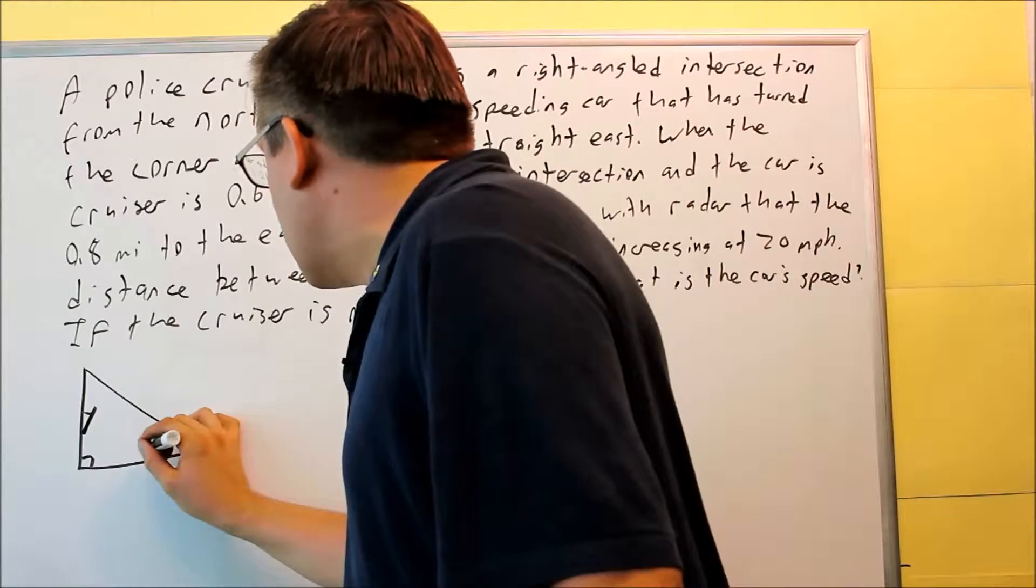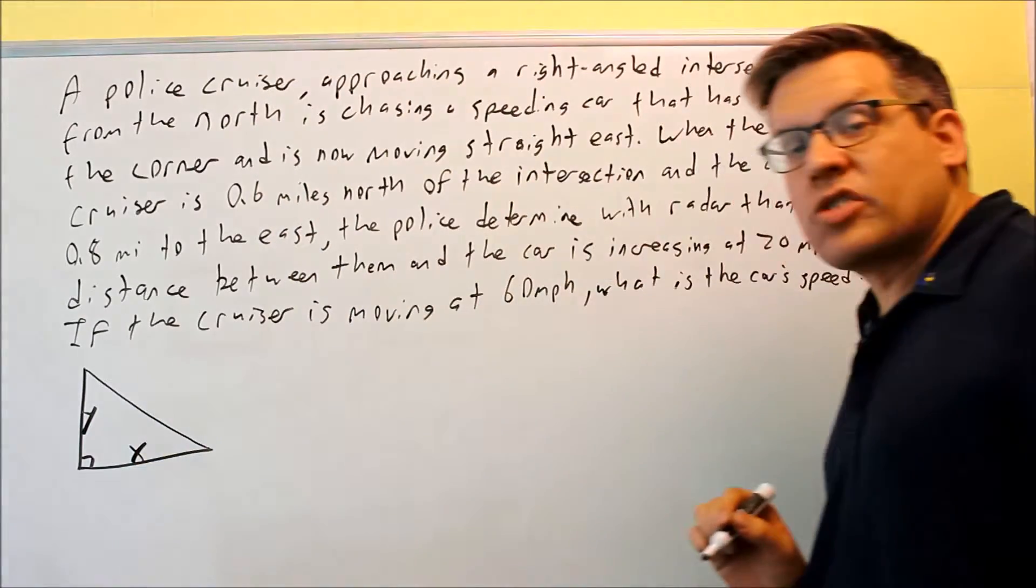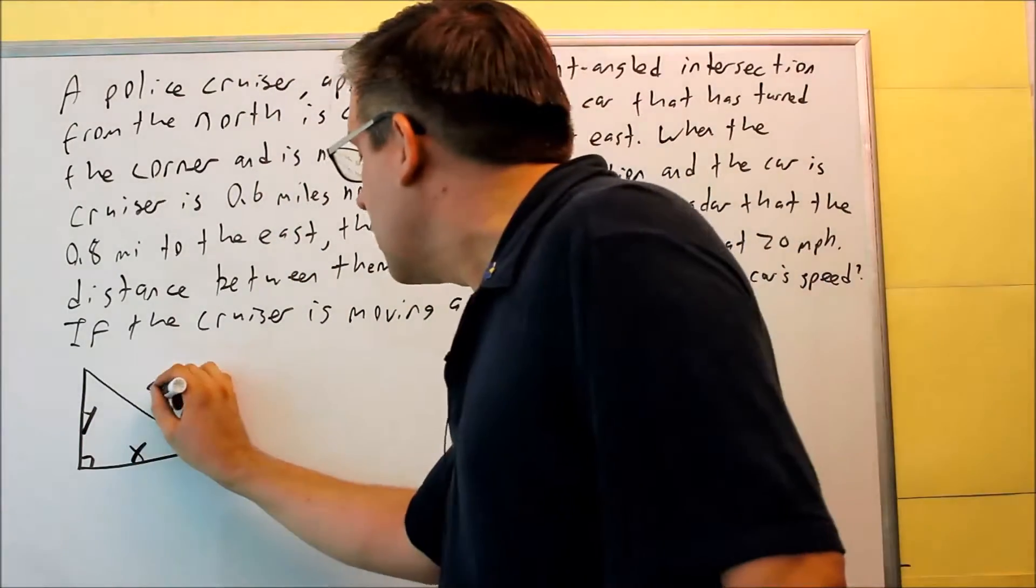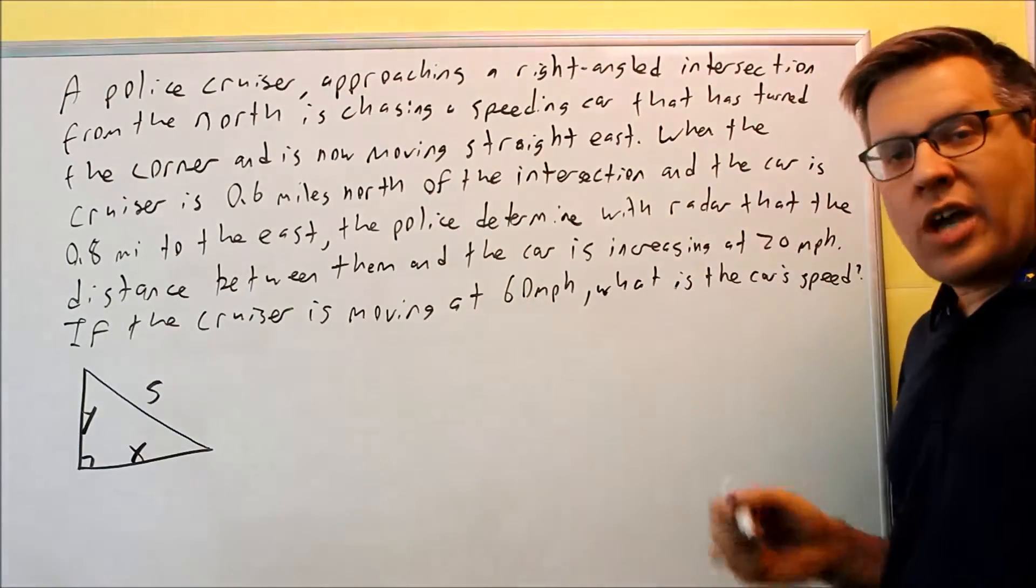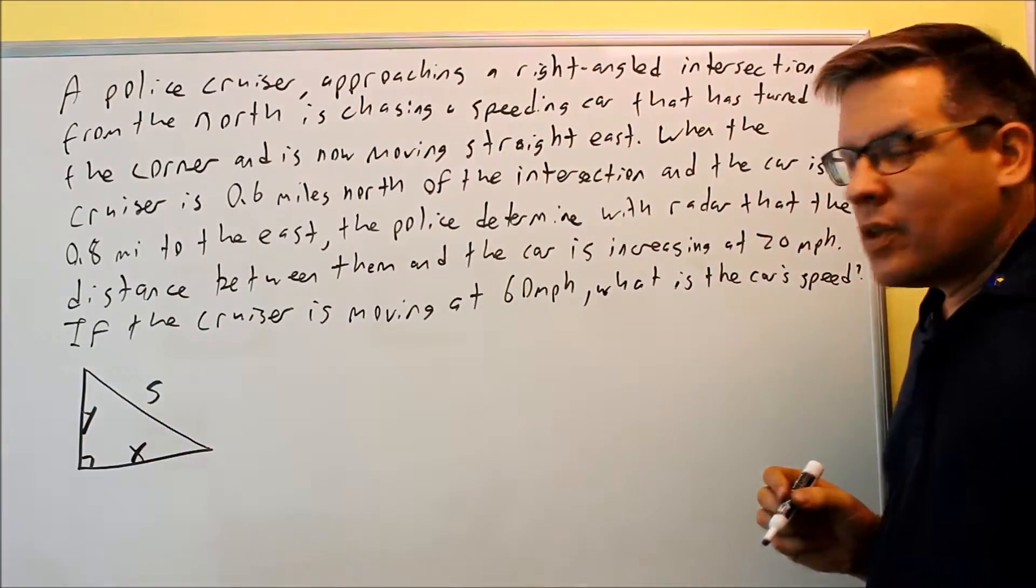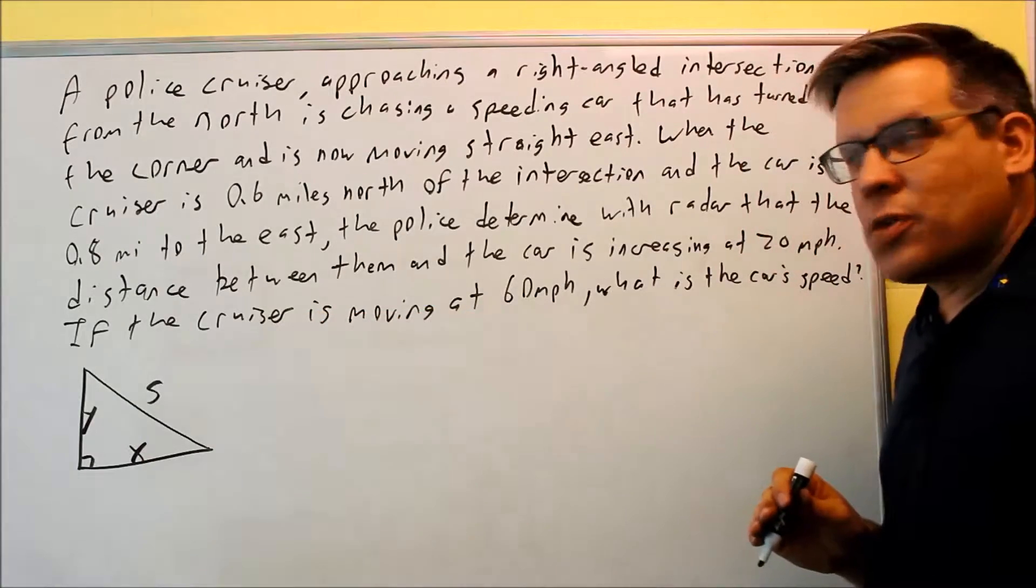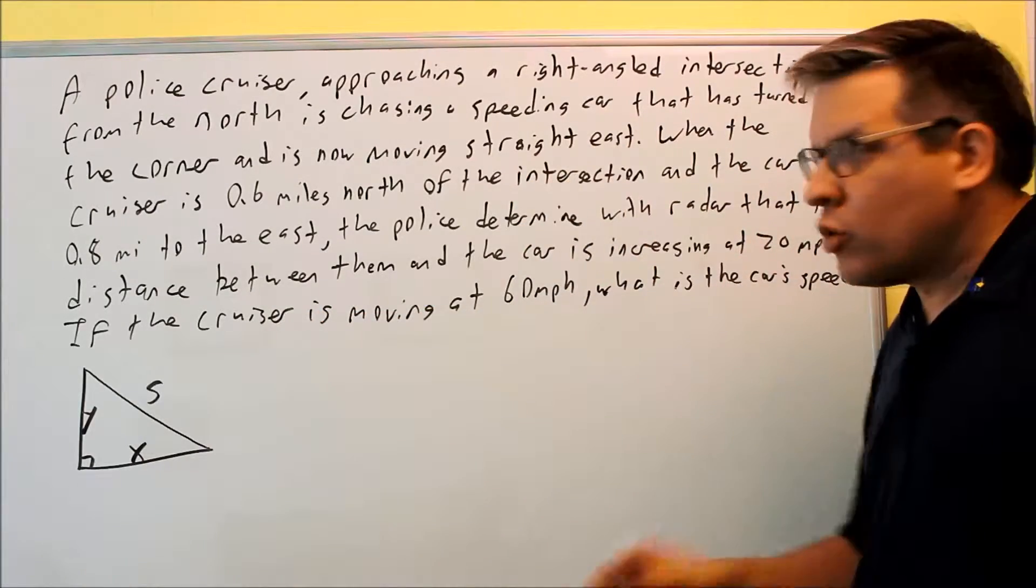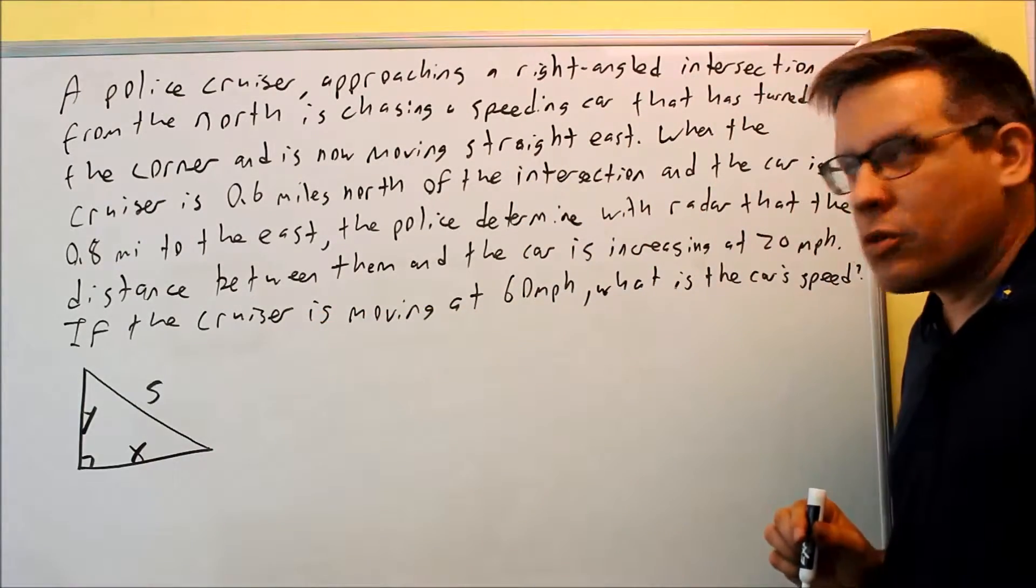I'm going to put some variables in here. Vertical distance I'll call Y. Horizontal distance is X, and then that side I'm going to use S for the distance between them. It's good to set this up first because then later on when we have numbers, we'll know what variable to assign that number to.